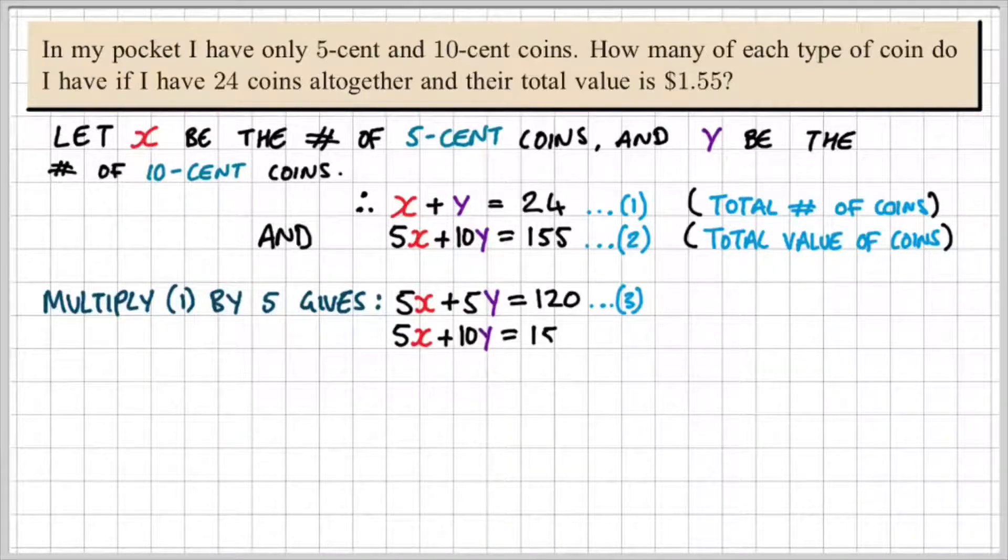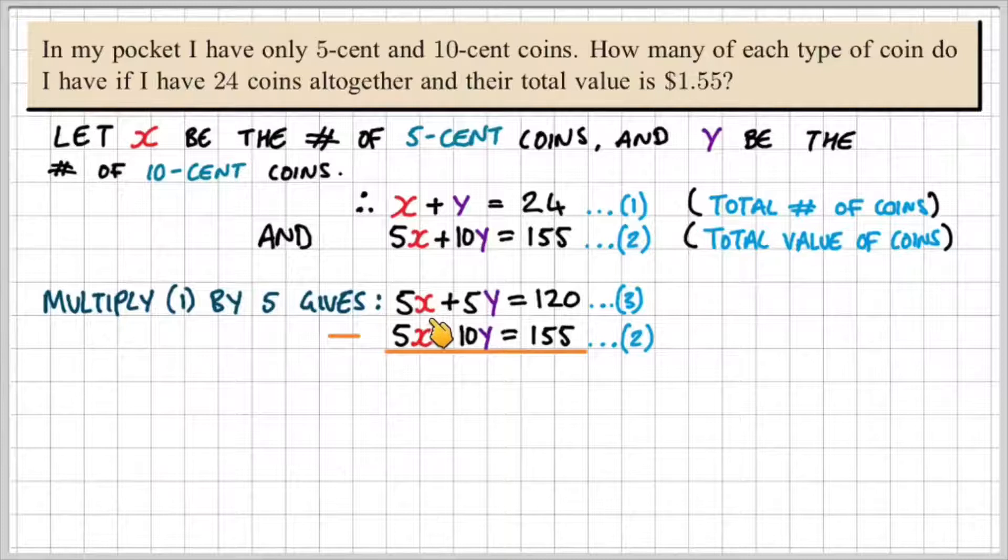Now if you notice, if I write equation 2, 5x and 5x can be eliminated because we have the same coefficient in front of the x.